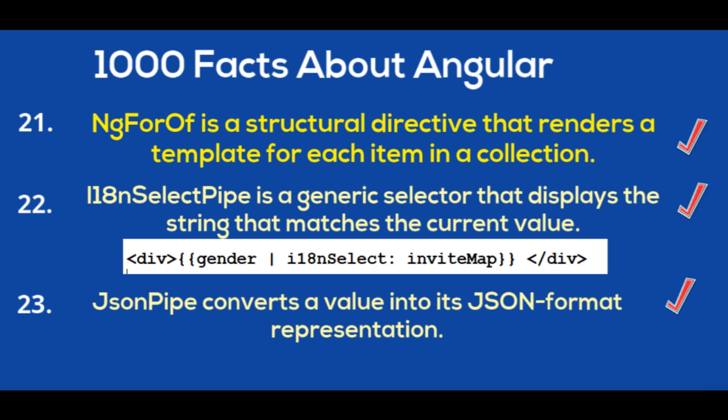ngFor is a structural directive that renders a template for each item in a collection. i18SelectPipe is a generic selector that displays the string matching the current value. JSON pipe converts a value into its JSON format representation and is useful for debugging.